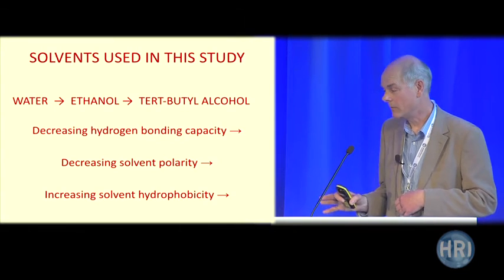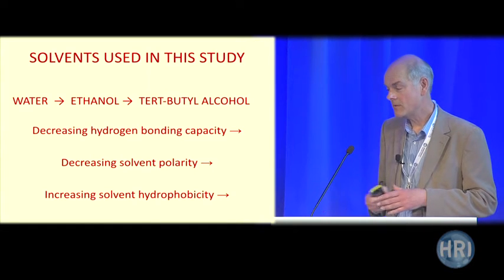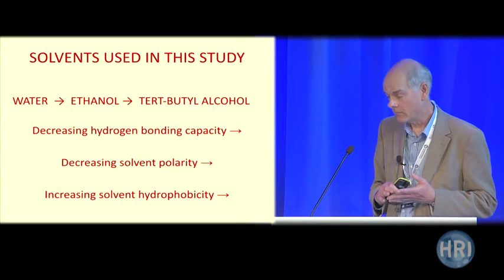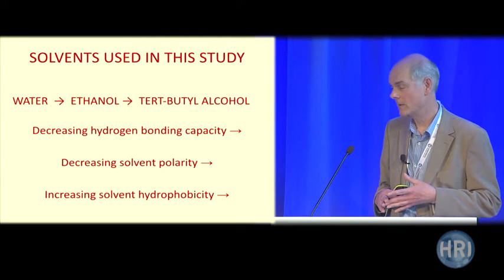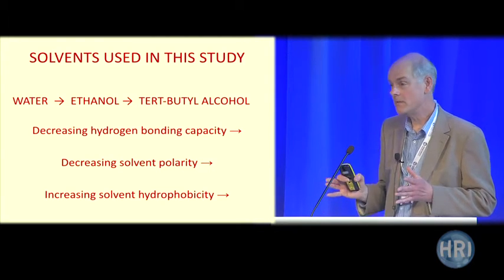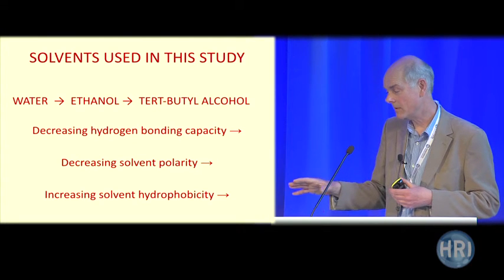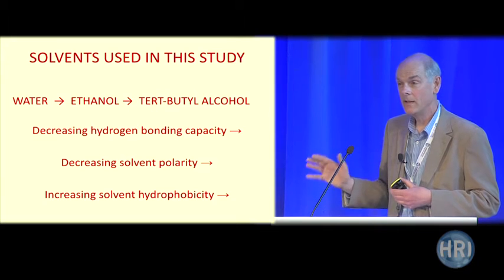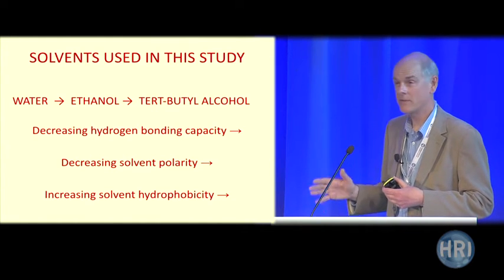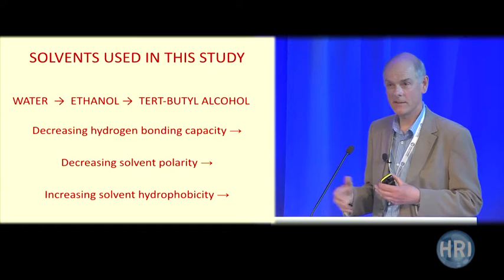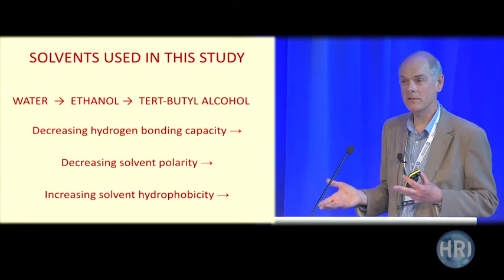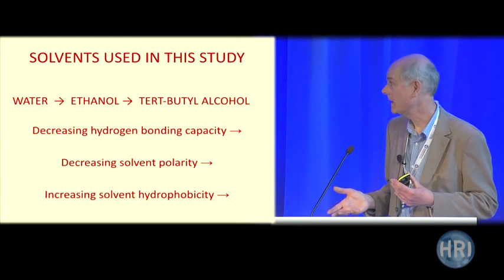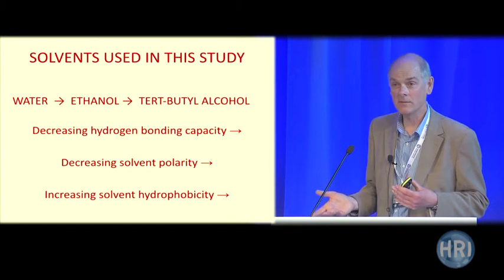These studies have been done in a number of different solvents, but primarily in water, ethanol, and tertiary butyl alcohol. The reason is that you get a decreasing hydrogen bonding capacity in going from water to tertiary butyl alcohol. There's a common view that water is special and necessary to see a homeopathic effect, but it might be that water isn't so essential. There's also a decreasing solvent polarity and increasing hydrophobicity going from water to tertiary butyl alcohol.